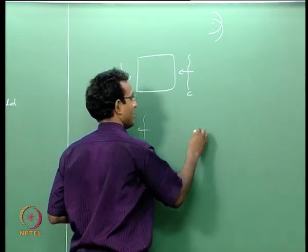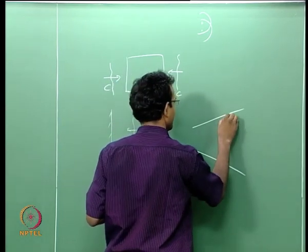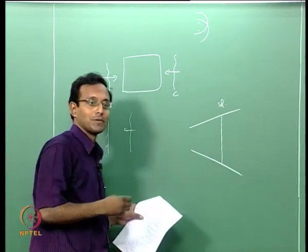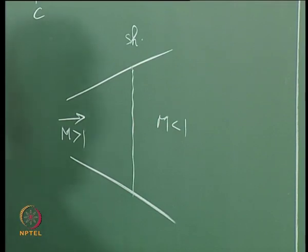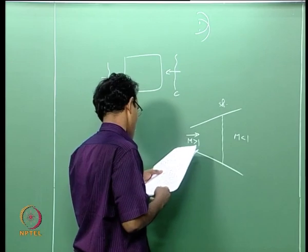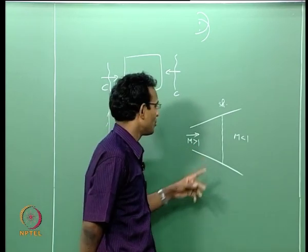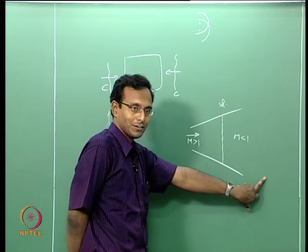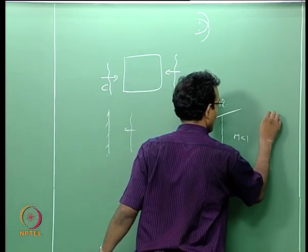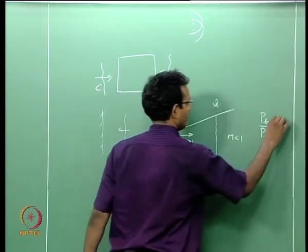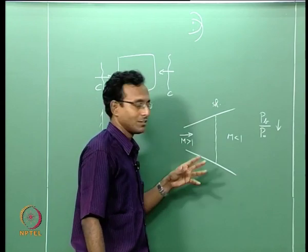The next thing to think about is: instead of a constant area duct, consider a diverging duct with a shock sitting here — M greater than 1 upstream, M less than 1 downstream. Suddenly I change the flow field. What do we do to make this shock move downstream in the divergent section? I can decrease the back pressure P_B, or I can increase the stagnation pressure P_not — both will change things. What I am really thinking about is decreasing the ratio P_B / P_not.